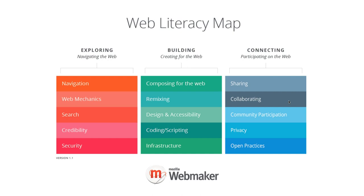When we look at the web literacy map, we've talked about exploring or navigating the web — broadly, reading. In version 1.1 we moved into connecting or participating online, which was online collaborative inquiry. Now we're moving into building, creating, or writing the web, which I've framed as online content construction. Version 1.1 includes composing for the web, remix culture, design and accessibility, coding and scripting, and infrastructure — building a network of connections to frame your identity and linking content to other pieces of online infrastructure.